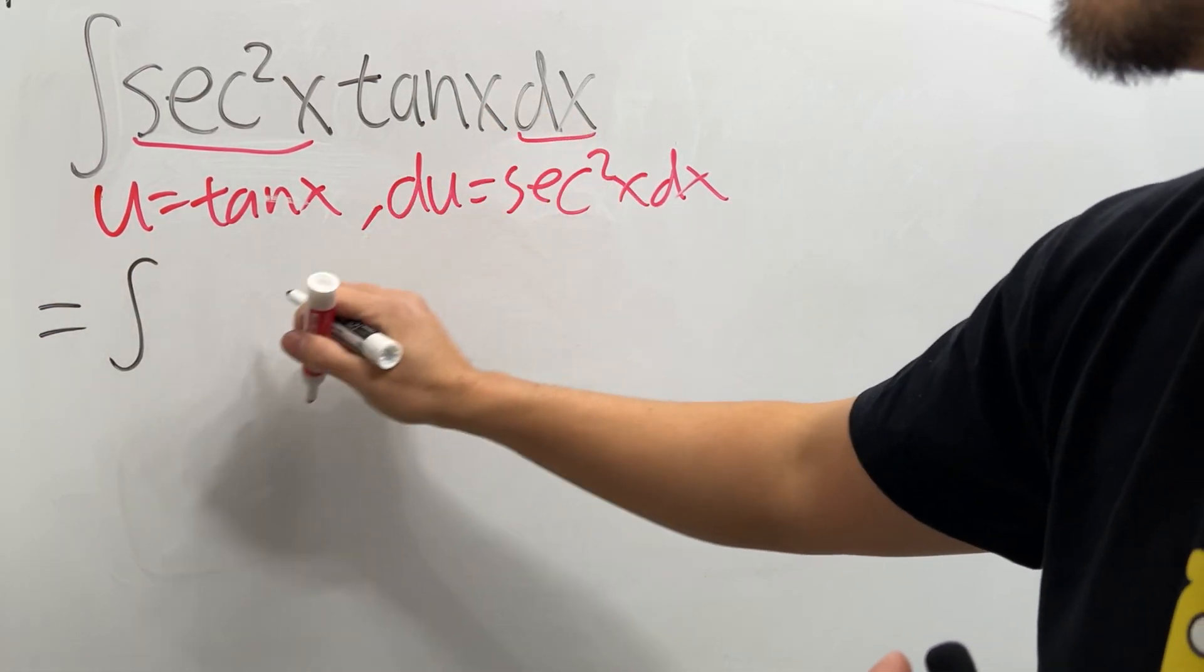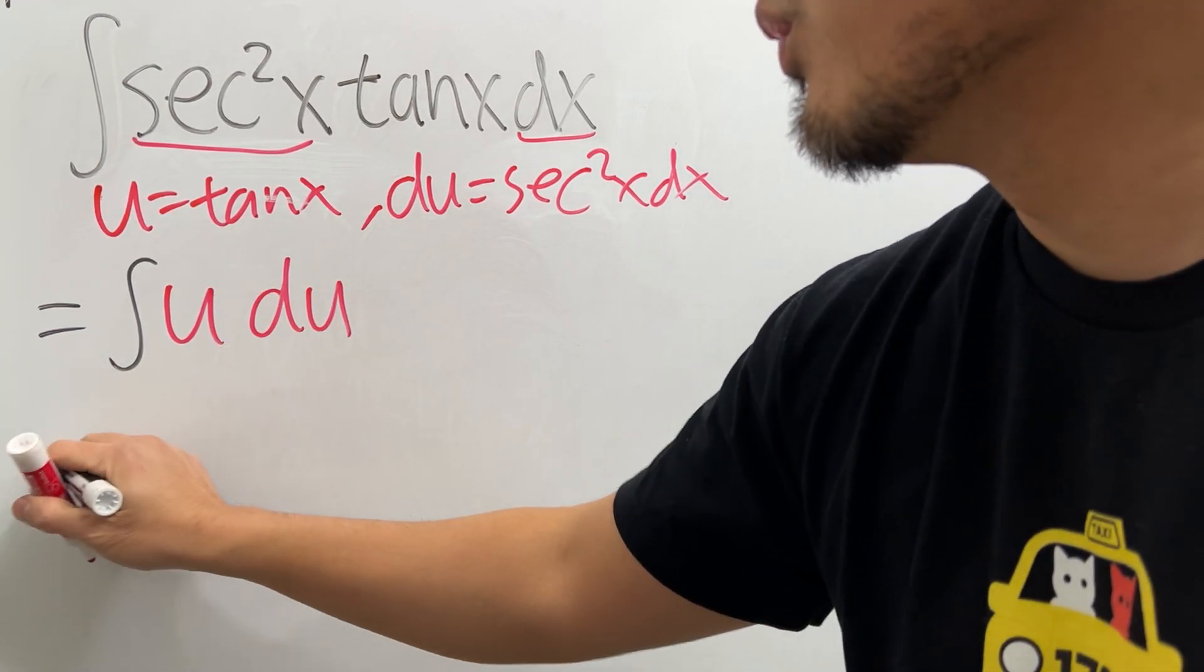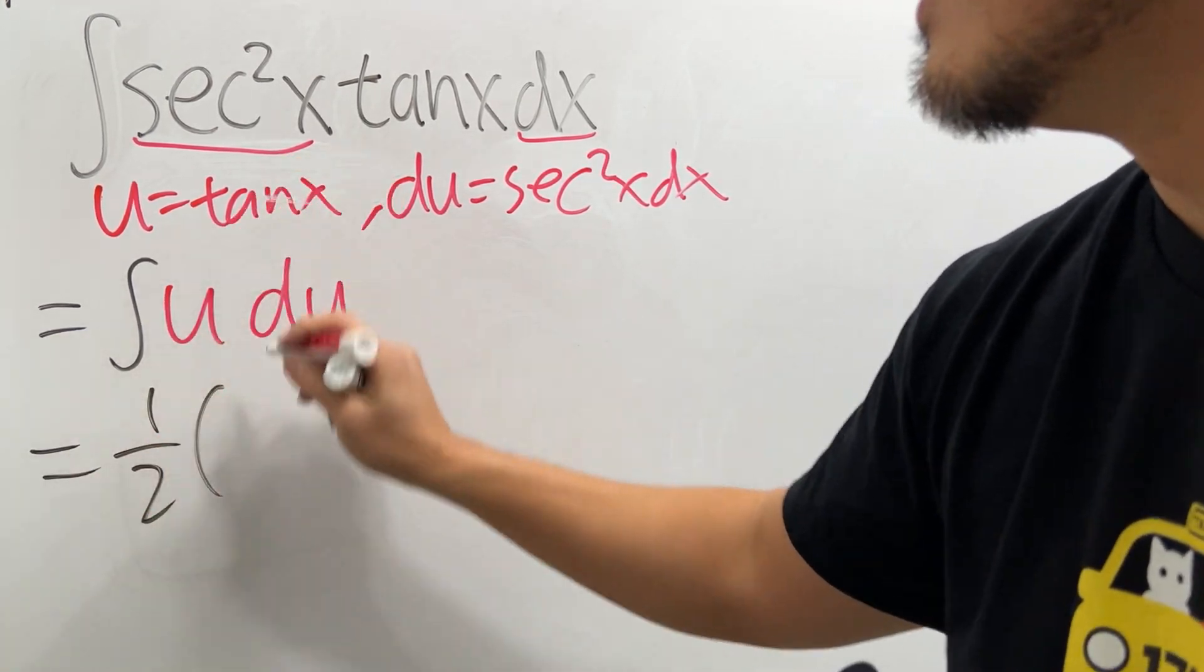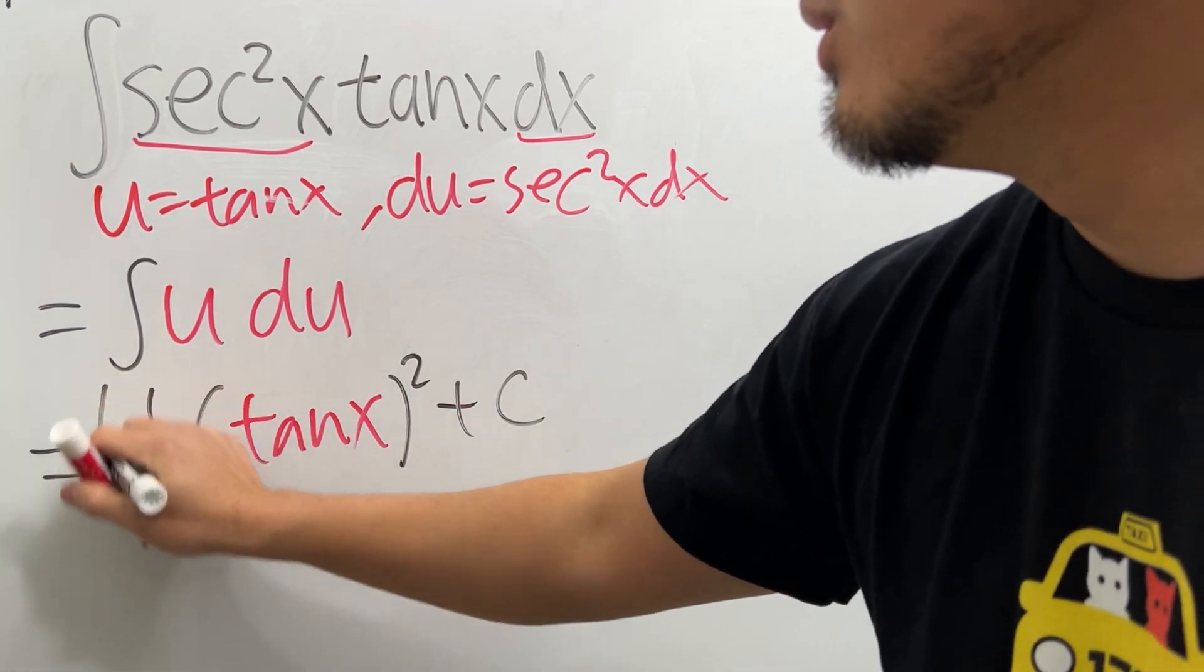we get integral, and then this right here is our u, and this and that together is our du, and integrate this in the u world, we'll just get 1 half u, which is tangent x, and then square that, and then plus c. It looks like we are done,